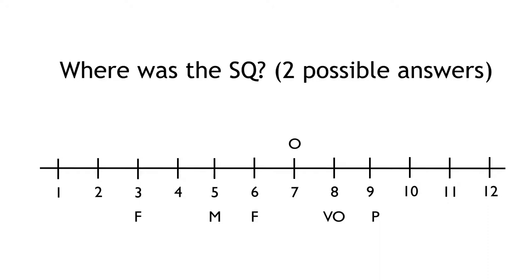Now, how about this problem? There are two possibilities. It could be either that the status quo was at 7, and so nothing changed because it was inside the gridlock interval, or that it started at 9, and that it ended up at 7 because that was the point that made VO indifferent between the new policy and the status quo.